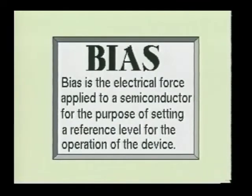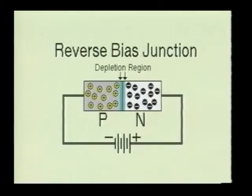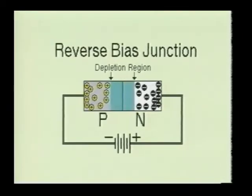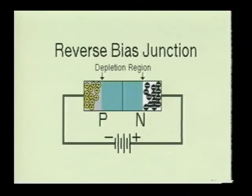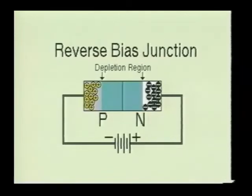When any semiconductor device is used in a circuit, it will have a wide range of voltages being applied to it. These voltages are referred to as bias voltages. The bias voltage will determine how the device will react in the circuit. When a negative bias voltage is applied to the P-side of the semiconductor and a positive bias is applied to the N-side, it causes the majority charge carriers to move away from the P-N junction. This causes the depletion region within the device to widen. When the depletion region widens sufficiently, it will cause the majority charge carriers to stop flowing. This is referred to as a reverse bias condition.